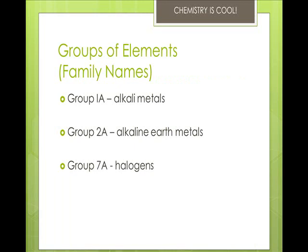Some groups of elements have family names. Group 1A are the alkali metals. These form a base, or alkali, when reacting with water — they don't just dissolve, they react. Group 2A metals are known as the alkaline earth metals because they form bases with water, but they don't dissolve well, which is why they're called earth metals — they make a muddy substance. Group 7A is known as the halogens, which means they are salt-forming.